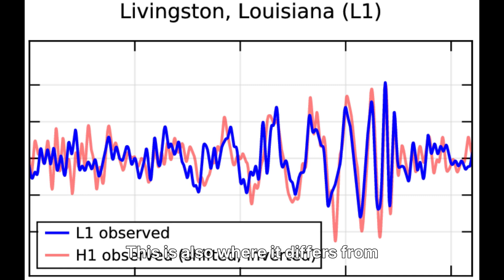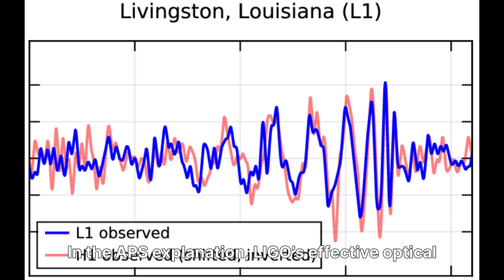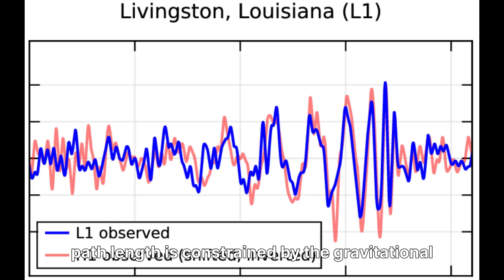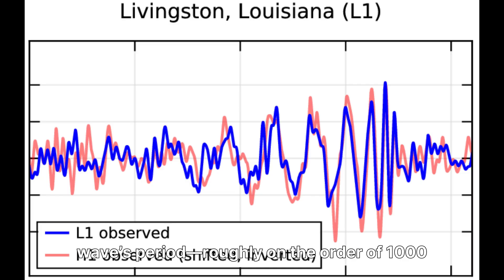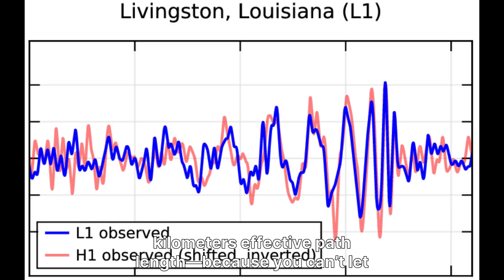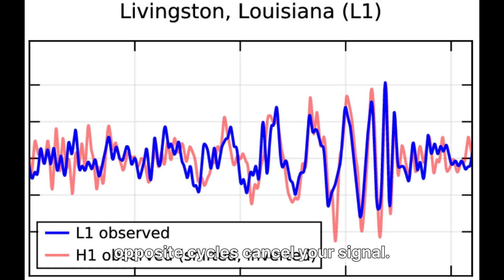This is also where it differs from LIGO-style constraints. In the APS explanation, LIGO's effective optical path length is constrained by the gravitational wave's period, roughly on the order of 1,000 kilometers effective path length, because you can't let opposite cycles cancel your signal.